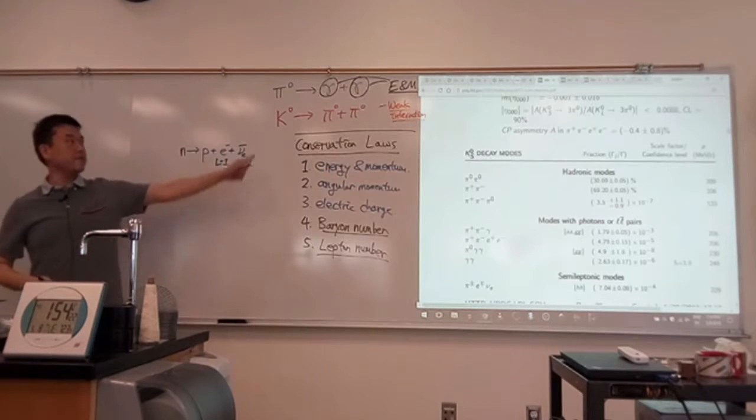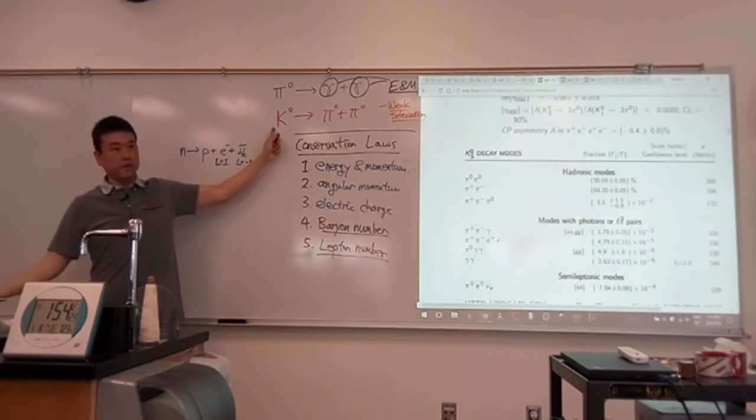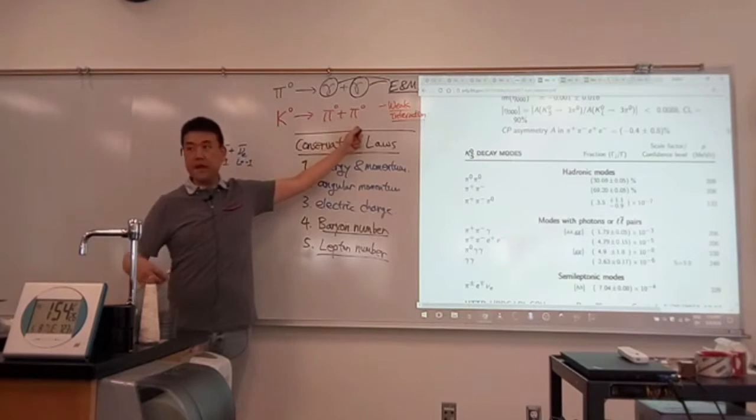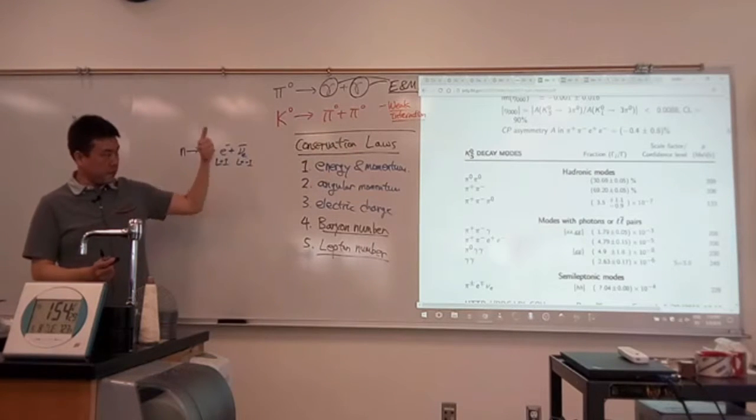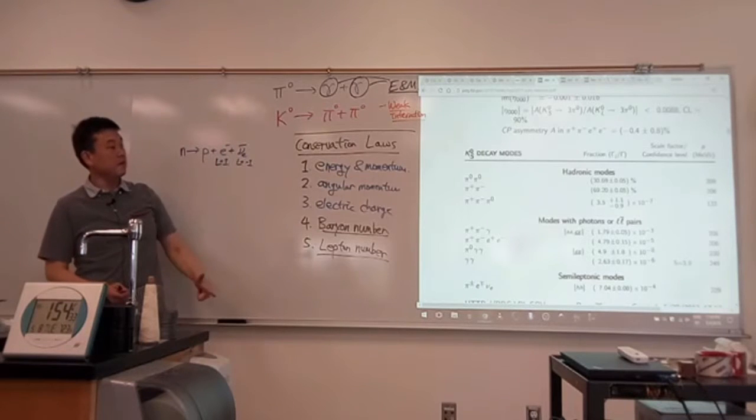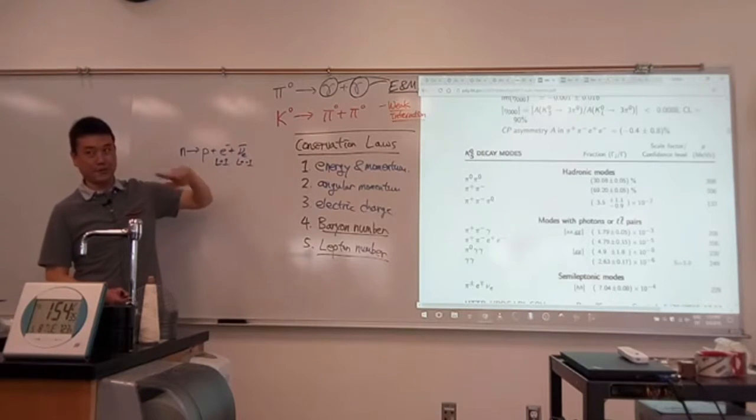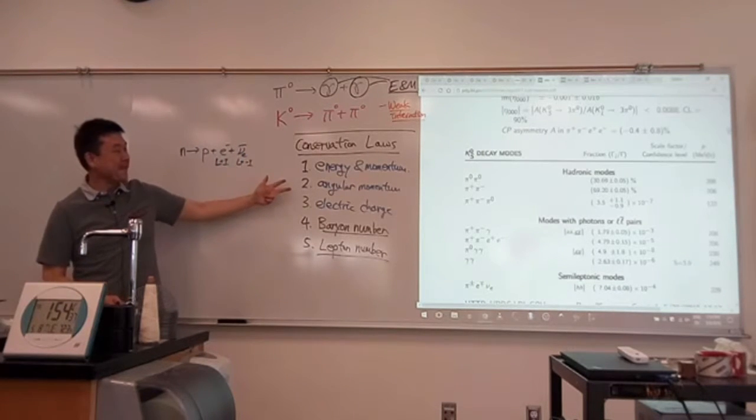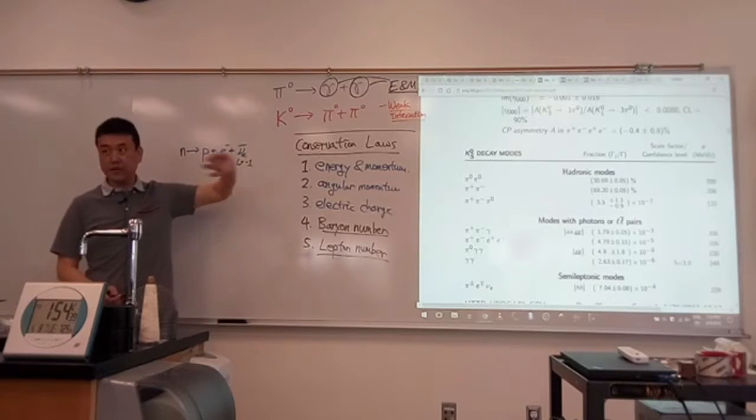All right, mesons, so zero baryon, zero lepton number, both mesons, so zero baryon, zero lepton number, you're fine. Energy and momentum conservation, you're fine. K is heavy enough. Angular momentum, you assume you're fine. Electric charge, neutral to neutral, that's fine. Okay.